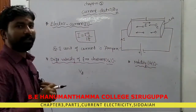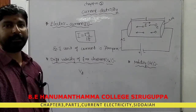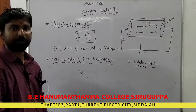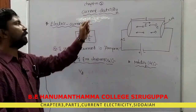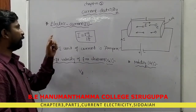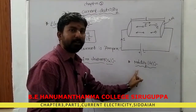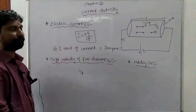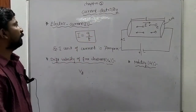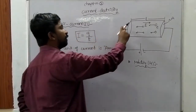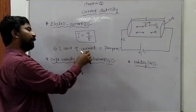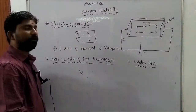Good morning students. Today we will discuss the third chapter: current electricity. Current electricity is a branch of physics which deals with the study of charges in motion. The important concepts in this chapter are electric current, drift velocity of free electrons, and mobility. Electric current is defined as the flow of electric charge, or in other words, the time rate of flow of charges through any cross-sectional area of a conductor. The SI unit of electric current is ampere.